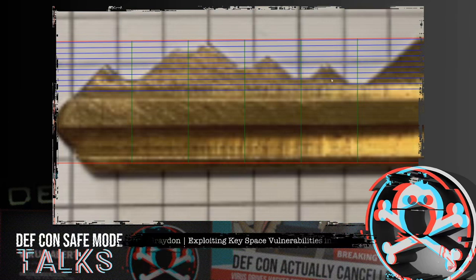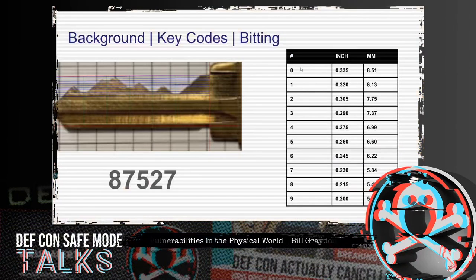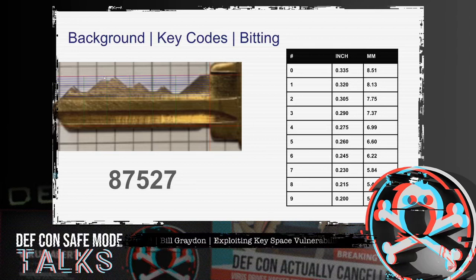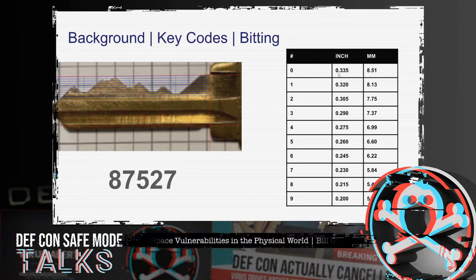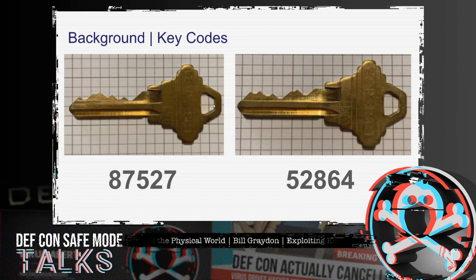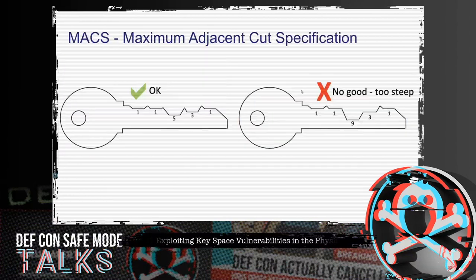This is a Schlage key — we read it from shoulder to tip. In pin one, we have cuts from zero down to nine, so this is an eight cut. From that we can get the full bitting code of eight, seven, five, two, seven. That makes sense when we look at the profile: deep, shallower, shallower, very shallow, and back to deep again. The thickness of the key from the base to the point of the cut is given by a chart for the Schlage system — an eight cut is two hundred and fifteen thousandths of an inch. One thing we need to be aware of is the maximum adjacent cut specification. We can't have a very shallow cut beside a very deep cut — in one case it's too steep to put the key in or get it out, and in another we start impinging on neighboring cuts.